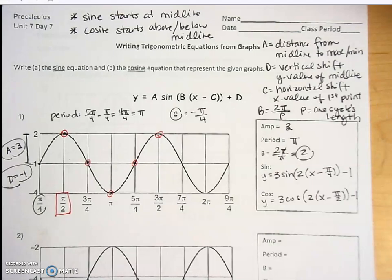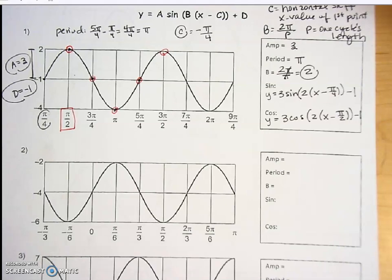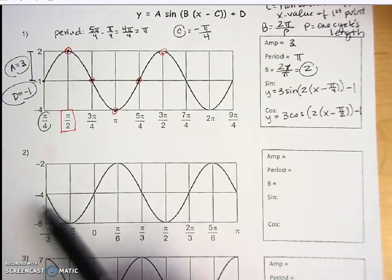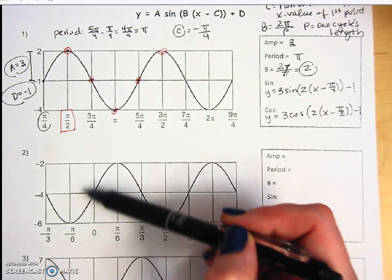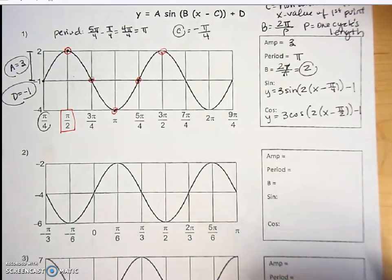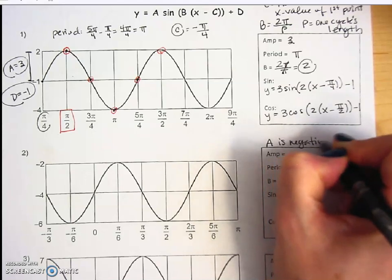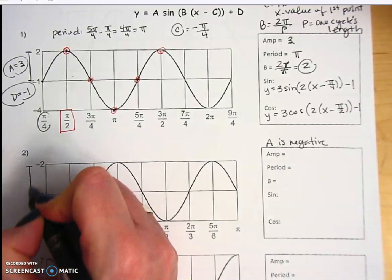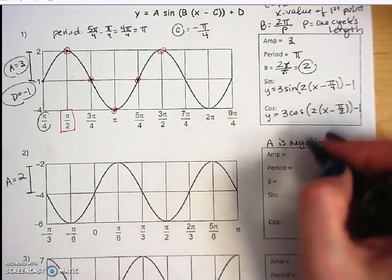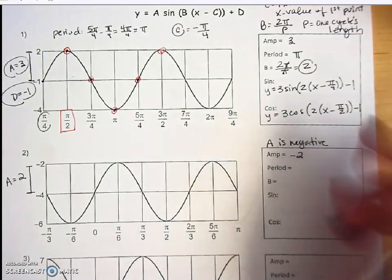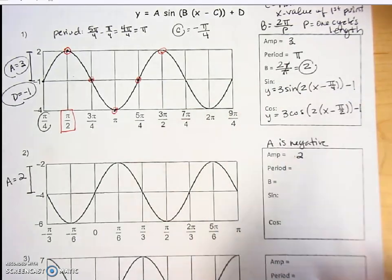If you're feeling confident, pause the video and try the next problem yourself. This graph starts at the midline, so we'll start it as a sine graph. Notice it dips down as it begins — that means we have a reflection over the x-axis, and my a value will be negative. The amplitude is the distance between the midline and a max point: from negative 4 to negative 2 is a distance of 2. We'll use 2 and make it negative in the equation.